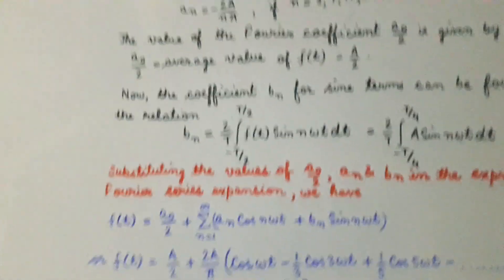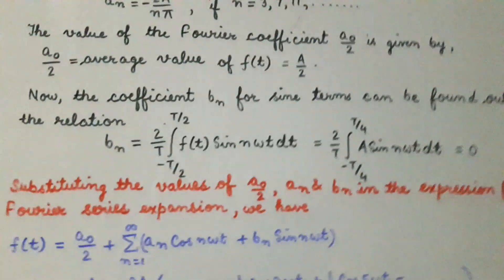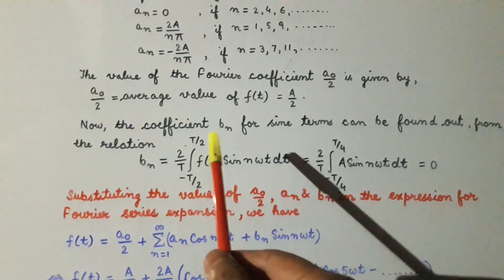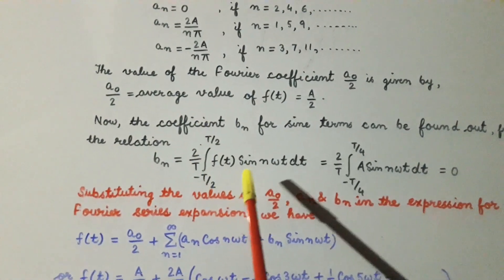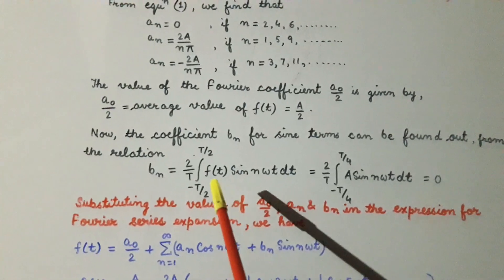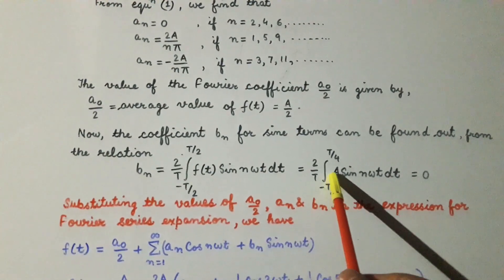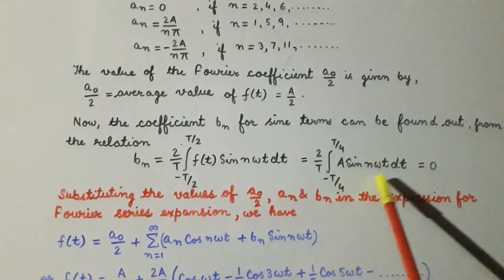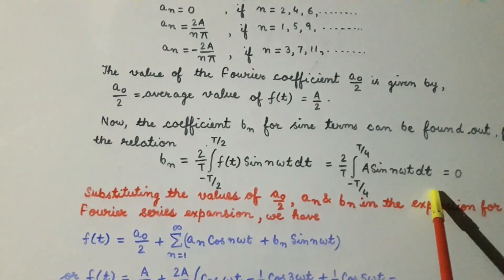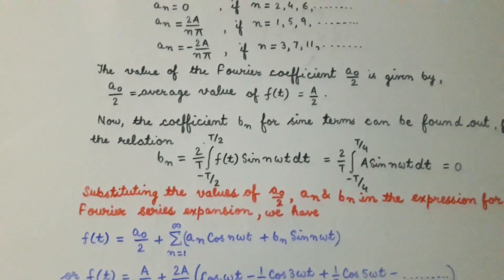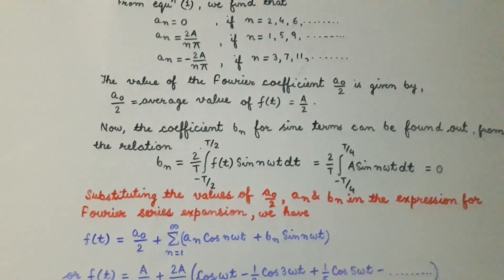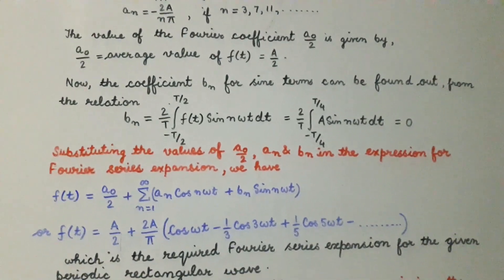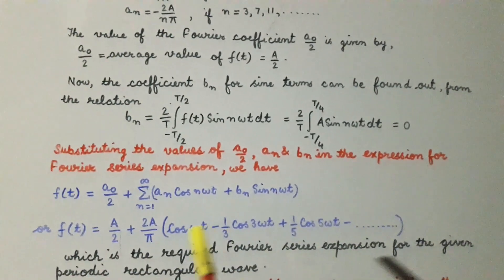After finding aₙ and a₀/2, we next find the coefficient bₙ. The expression for bₙ is given by (2/T) times the integral from −T/2 to +T/2 of f(t)·sin(nωt)·dt. Substituting f(t) = A and integrating, we find that bₙ = 0 in this case.